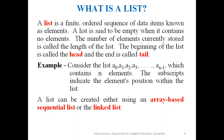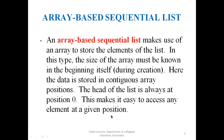The subscripts 0, 1, 2, 3, etc. indicate the position of the elements in the list. To create this kind of list, we can either use an array-based sequential list or a linked list. The array-based sequential list makes use of an array to store the elements, and the size of the array must be known at the beginning, that is before execution. In computer memory, data is stored in continuous memory locations and the first element's index value starts from 0.